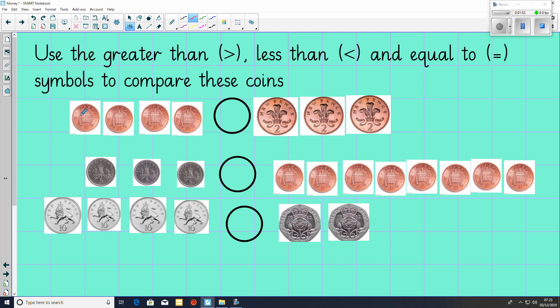For the first one, we've got 4 1p's, so that's 4p. And on the other side, we've got 3 2p's, 2, 4, 6, 6p. So the correct symbol is less than, 4p is less than 6p.